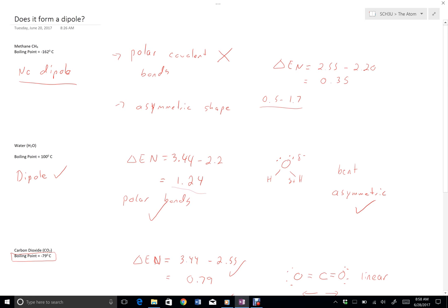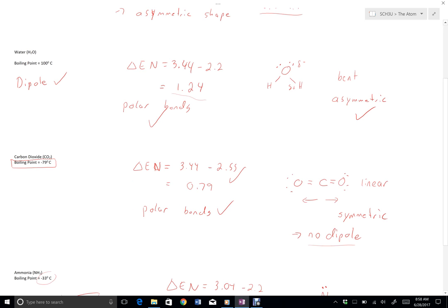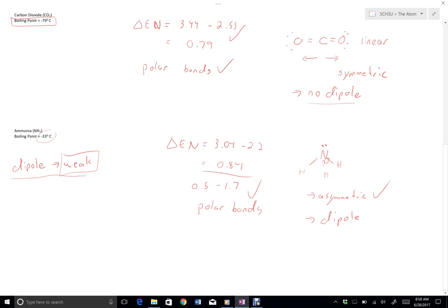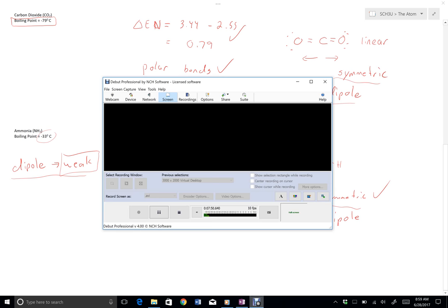And how we tell if something has a dipole formation. We have to get polar bonds using the electronegativity difference first, and then if we have polar bonds, we have to consider the shape to figure out if it's symmetric or asymmetric.